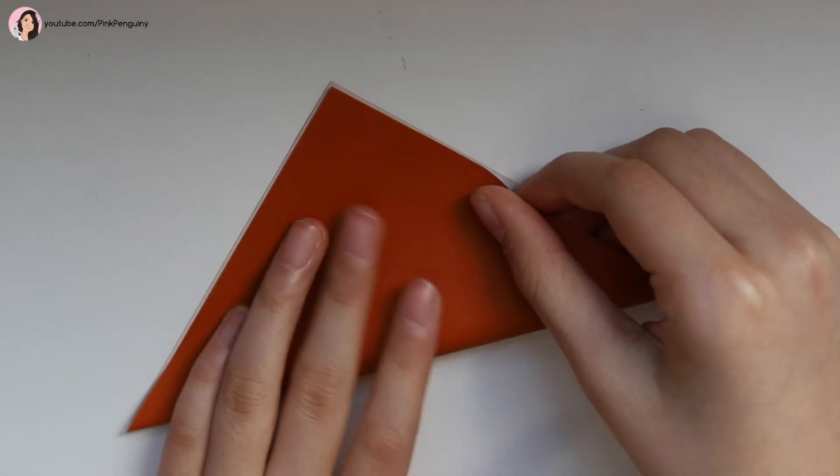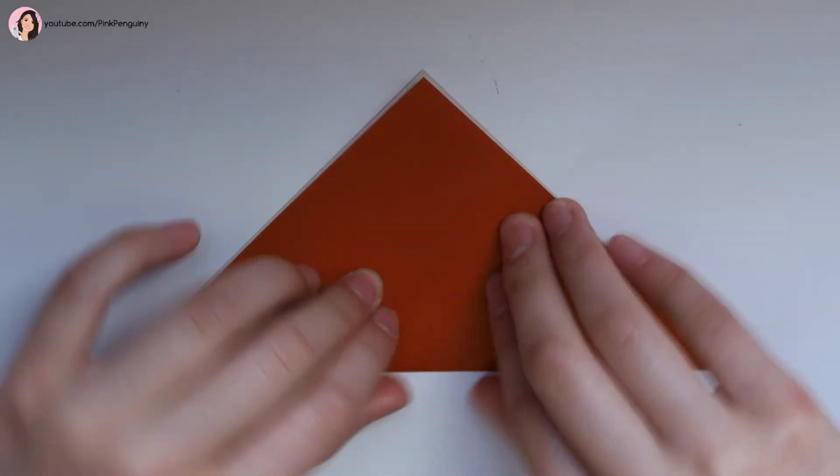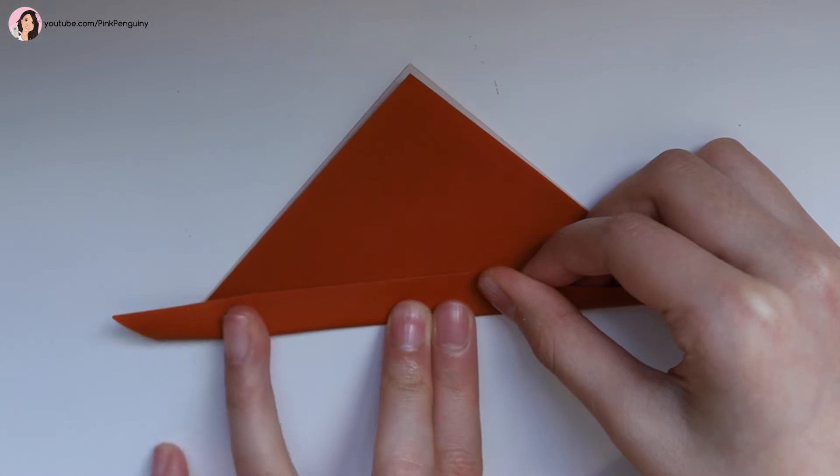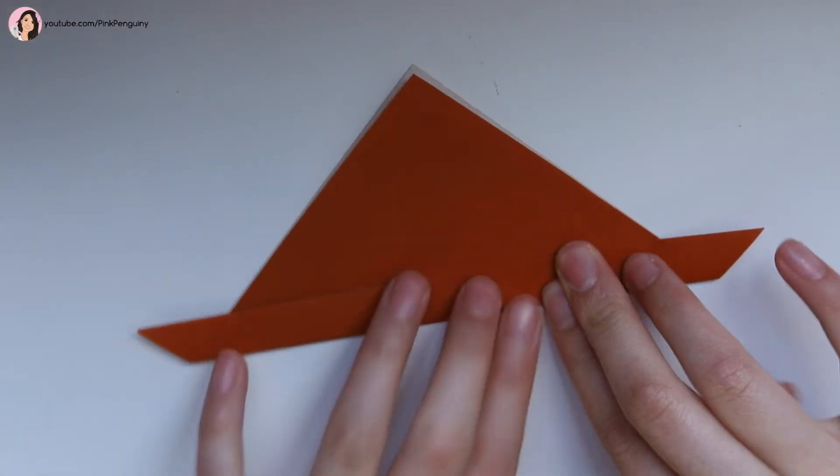Let's make the brown bear. So we'll start with our brown piece of paper. Fold it in half in a triangle like this. Then you want to fold it up about a centimeter and try and get it as straight as possible.